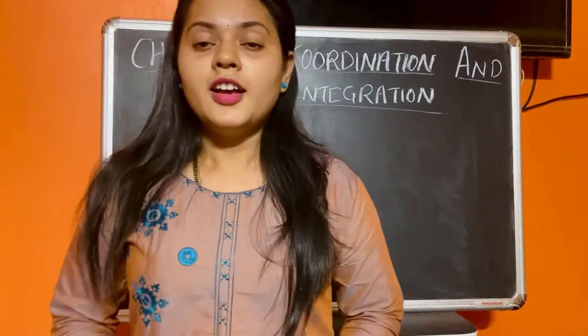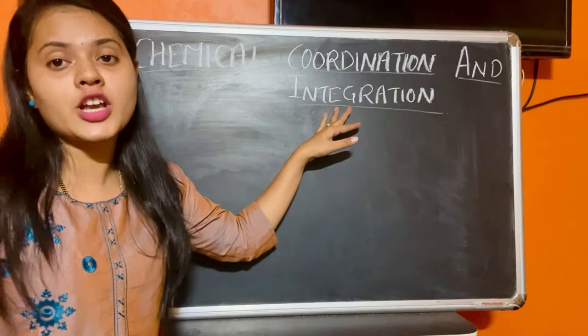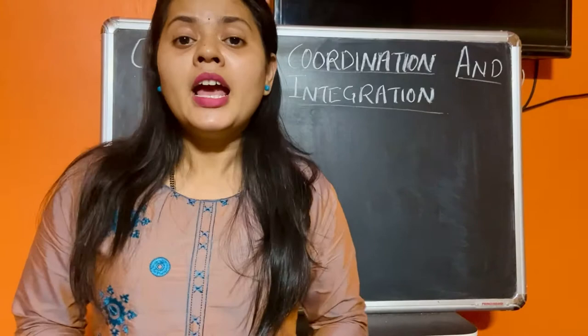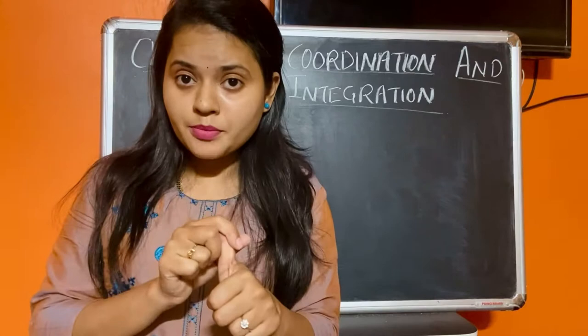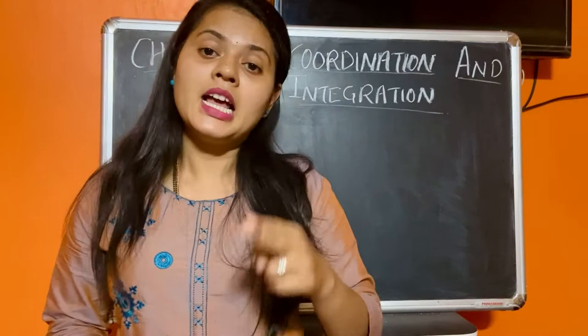Hello students, today we will take up the new chapter from human physiology — chemical coordination and integration, chapter 22 from Levin Standard Biology. In control and coordination we have two systems: the nervous system, which can be called neural control and coordination, and the second is chemical coordination — that means the glands.